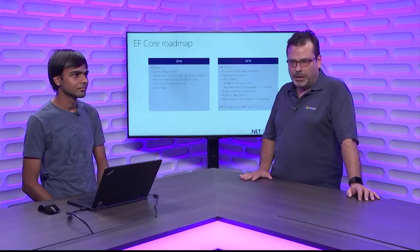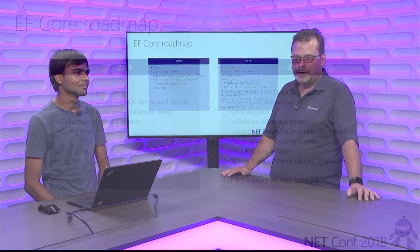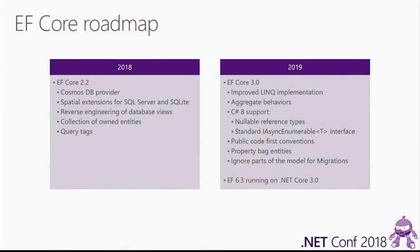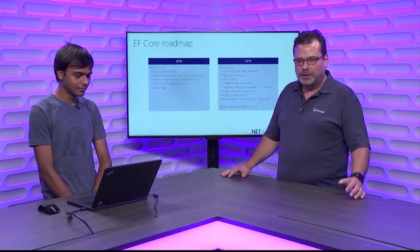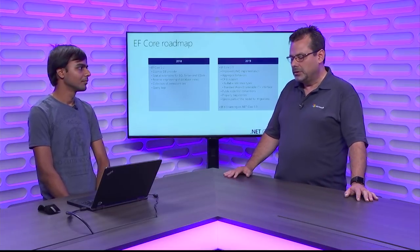Another feature C# 8 is adding is non-nullable reference types. We can take advantage of knowing that, say, a string property is not going to be nullable — we can make it non-nullable on the database as well. At the same time when we generate SQL, knowing it is not nullable allows us to simplify the SQL we generate. There are other features like property bag entities that we would like to include — the ability to map to an object that is not a different CLR type but is just a dictionary of string to object.